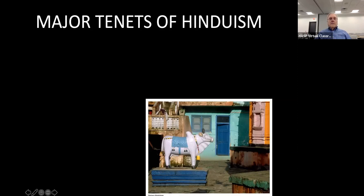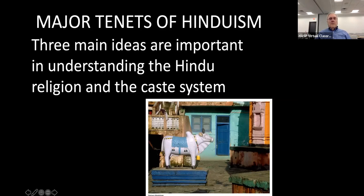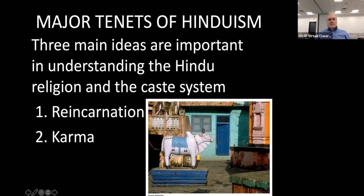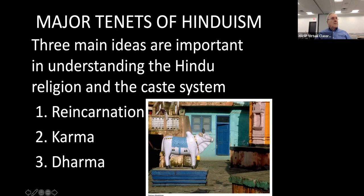The area of Hinduism is shown here — the yellow part is Hindu, the darker part is Islamic, and there is some Buddhism in Nepal and Sri Lanka. The three main ideas important in understanding the Hindu religion and the caste system are reincarnation, karma, and dharma.